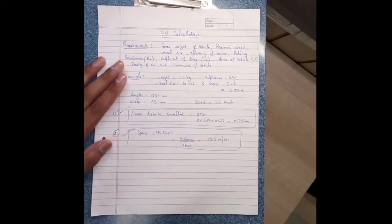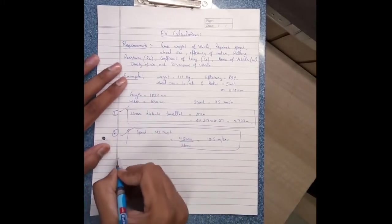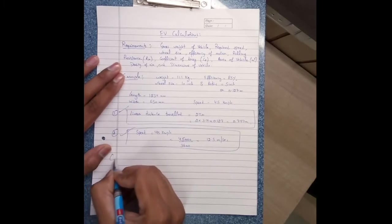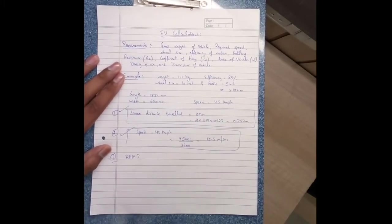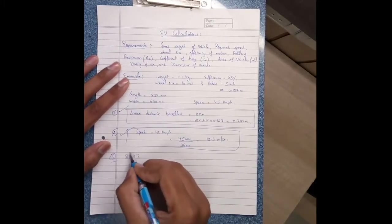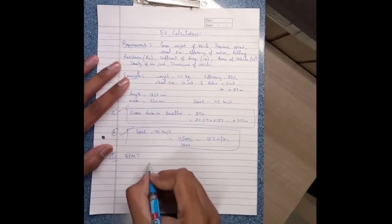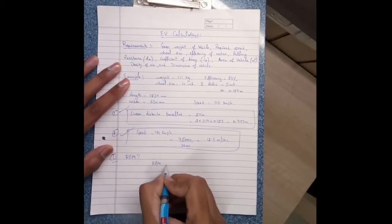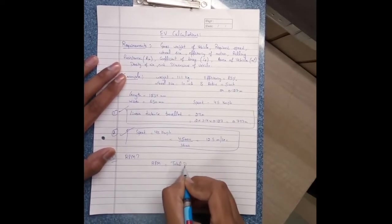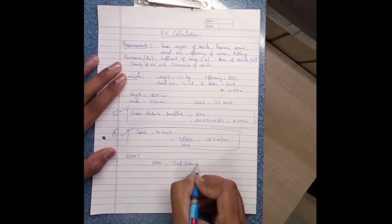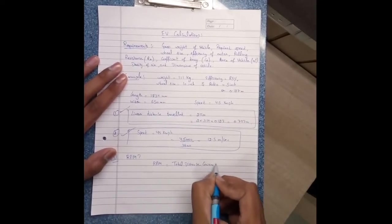These two values are used in further calculations. Now first question is: what is RPM? RPM is revolution per minute. And how to calculate RPM? RPM equals to total distance covered per hour.